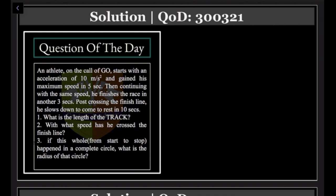...starts with an acceleration of 10 m/s² and gains his maximum speed in 5 seconds. So the maximum speed is v_max = u + at = 0 + 10(5) = 50 m/s.